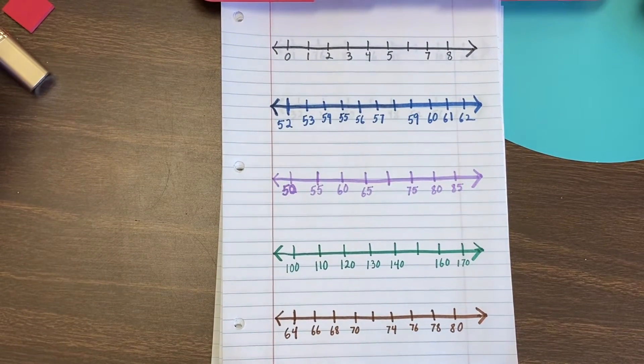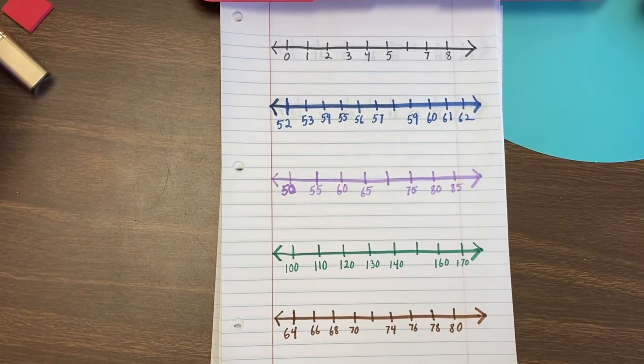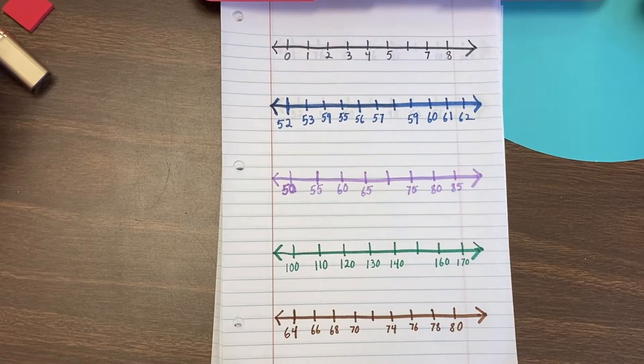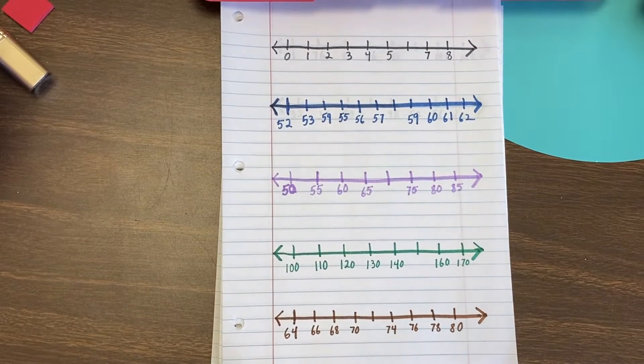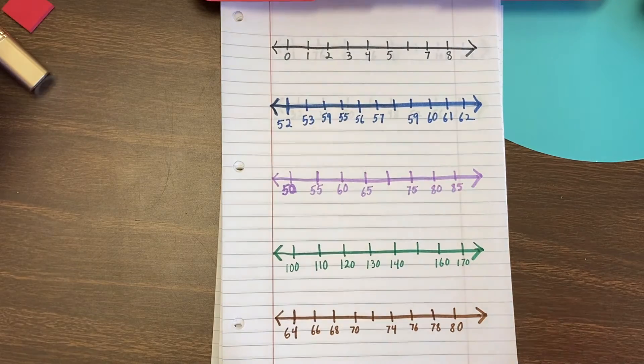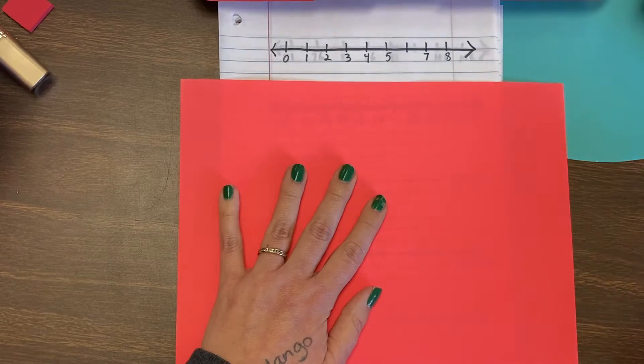Hi, we're going to talk about how to determine the increment on a number line, the increments on a number line. Let me get a piece of paper so we can see this a little more clearly.